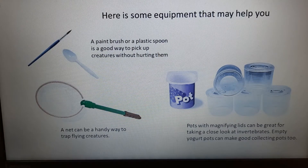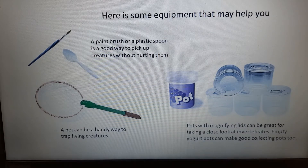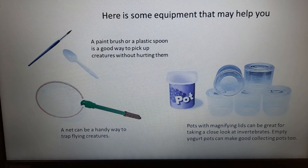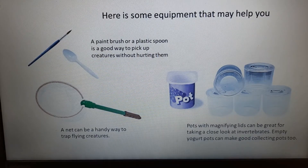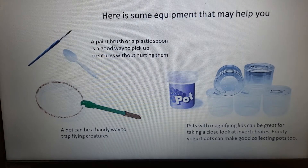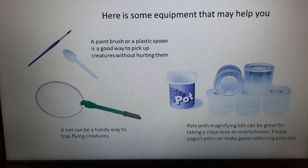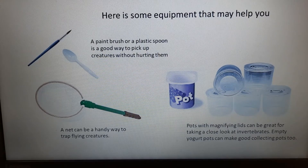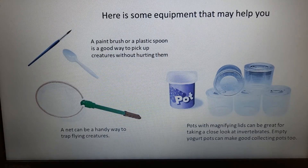At school we have pots with magnifying lids, but at home you could use a yogurt pot to collect and safely look at invertebrates up close. If you have a magnifying glass, that's brilliant. Many mobile phones can also take a picture and then enhance and magnify it, so you can get a really amazing close-up view without having to touch the creature.